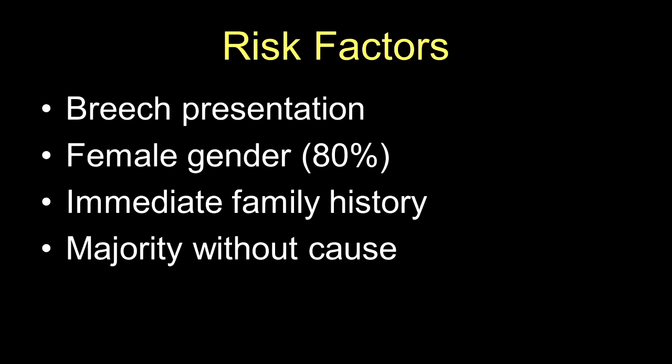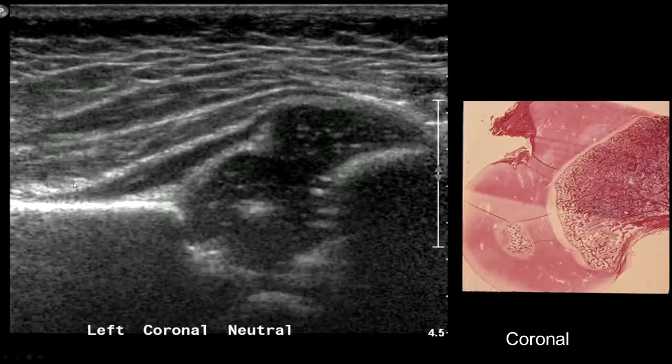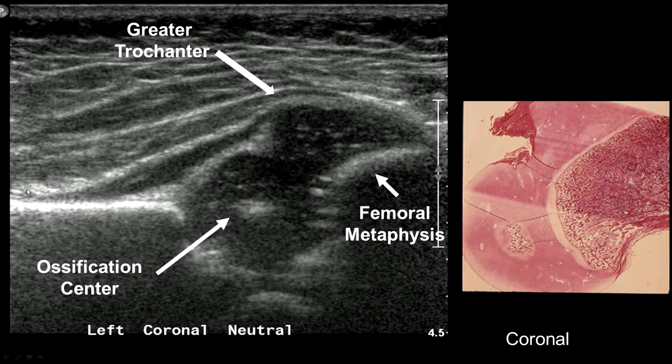The majority of hip dysplasias don't have a real cause. This is an image matched with a specimen from the work of Milgram, where you can see the femoral head, the greater trochanter, and the ossification center. What we are going to see in ultrasound is a coronal image where we see the ossification center, the femoral metaphysis, the greater trochanter, and the acetabular rim.